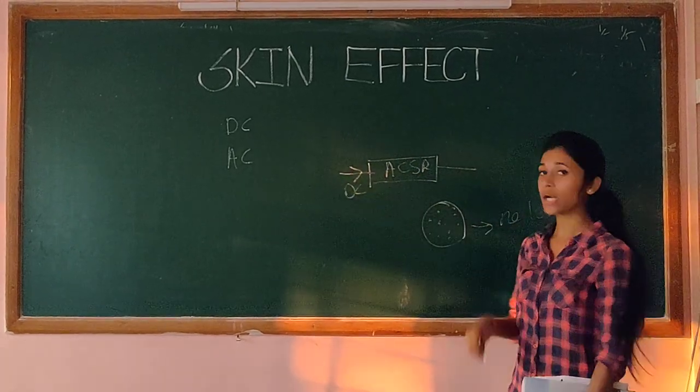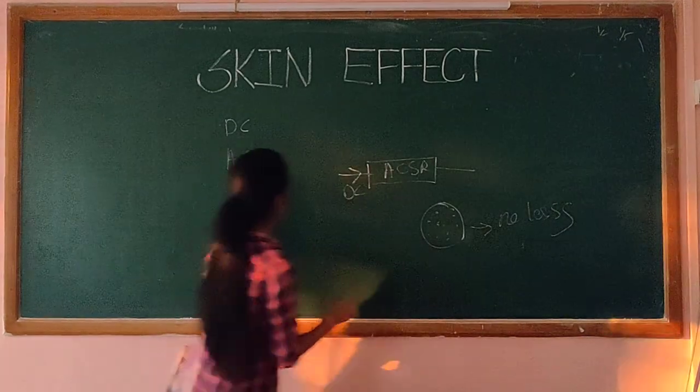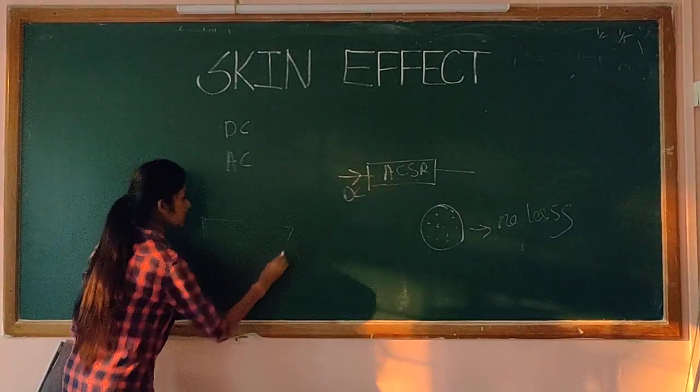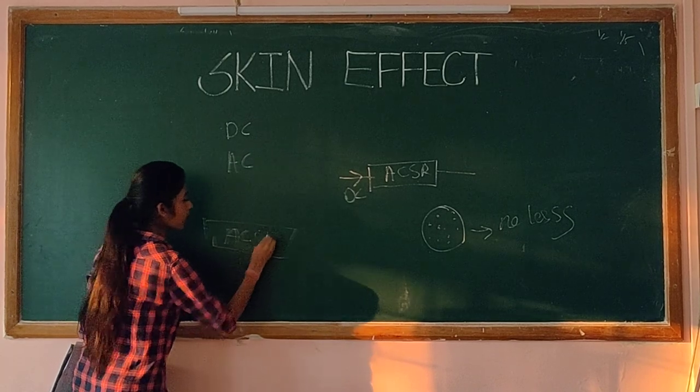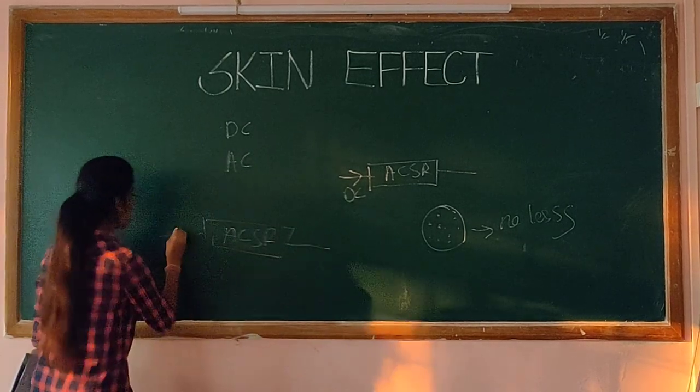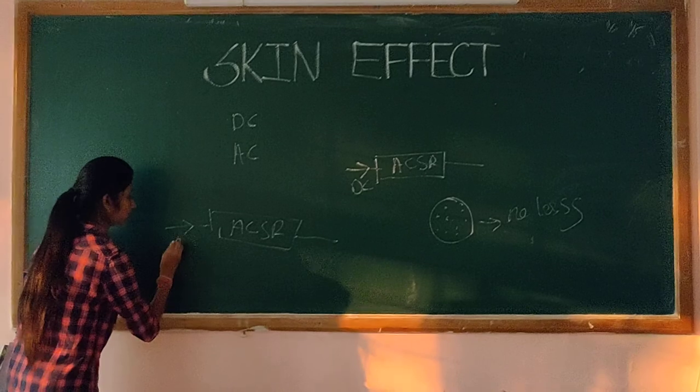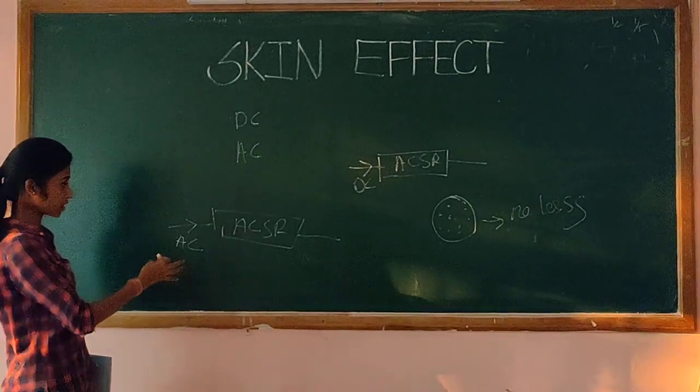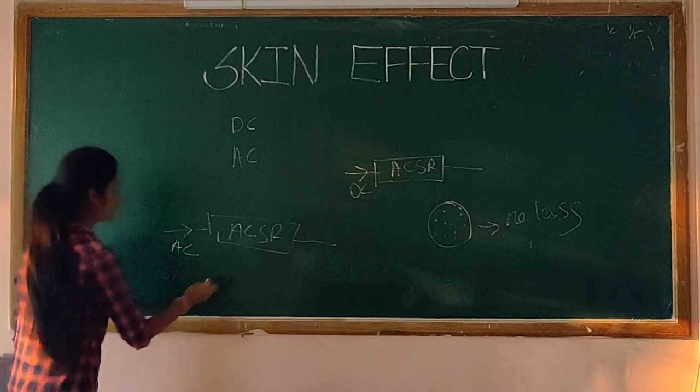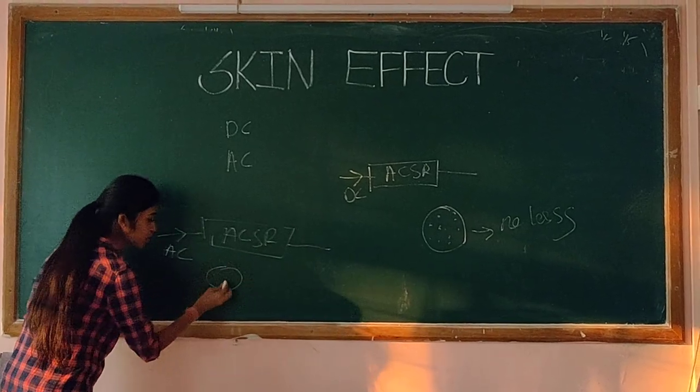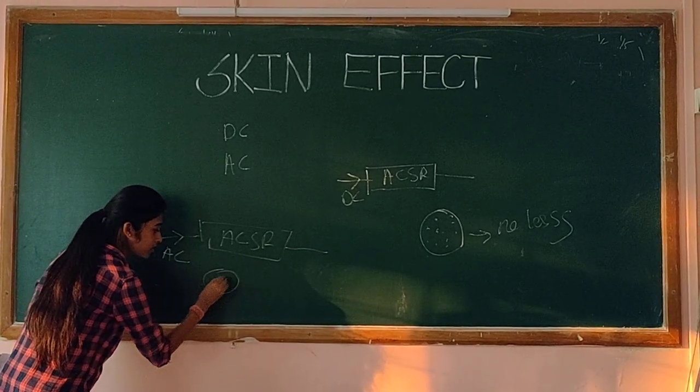But on the other hand, if we take a conductor which is ACSR and AC current flows through this conductor, then flux distribution is not uniform. The flux distribution is concentrated at the centre.